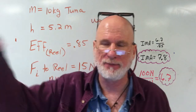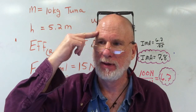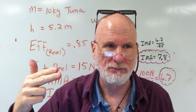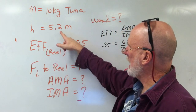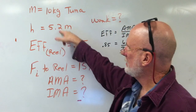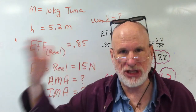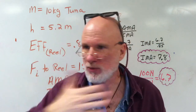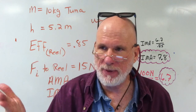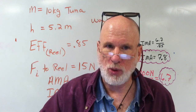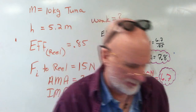Now think — what should the work be? Well, what should it be? This is the height. That's the mass. MGH is what it should be. It's what it should be, but it's 0.85 efficient. See what you can do.